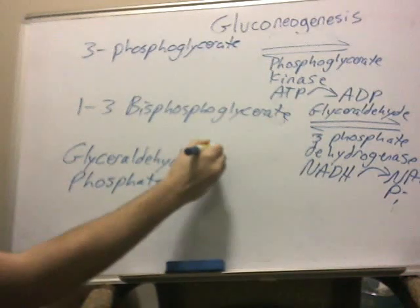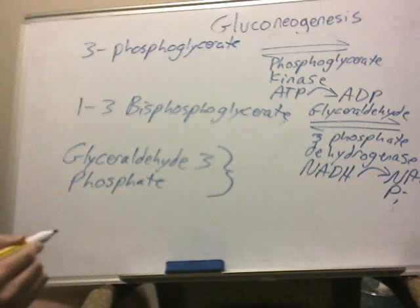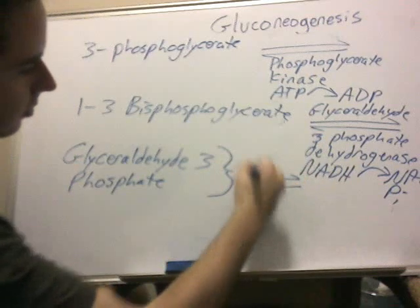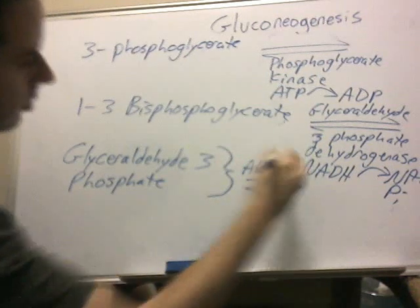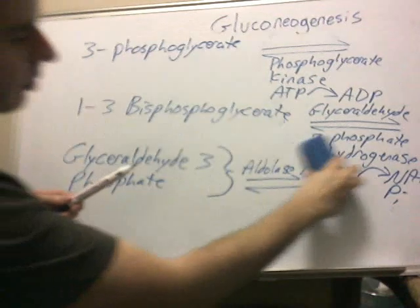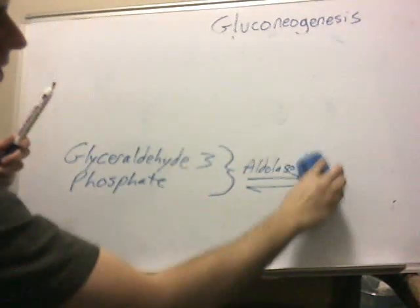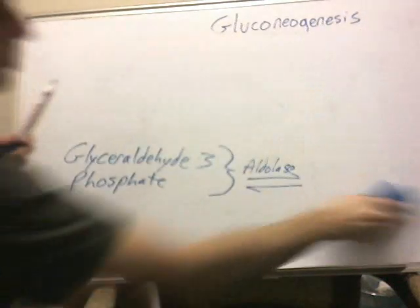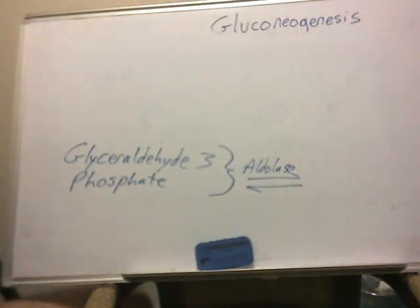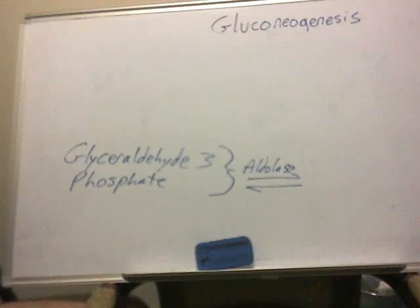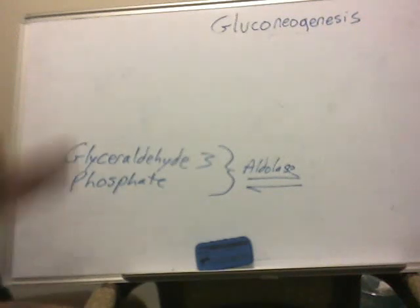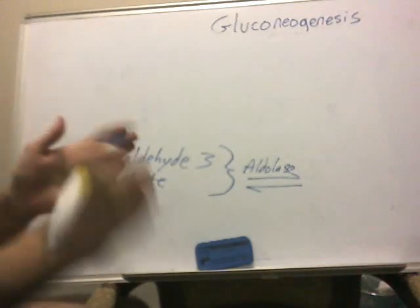We're going to close the brackets from that 2, because with this next step — aldolase — we're going to build the 6-carbon molecule again. It's also important to note that if aldolase is not used in this step and instead triose phosphate isomerase is used, you'll have dihydroxyacetone phosphate, which is the precursor to glycerol. So this pathway, if it doesn't go all the way through to completion, there are different side steps where the pathway can branch off.